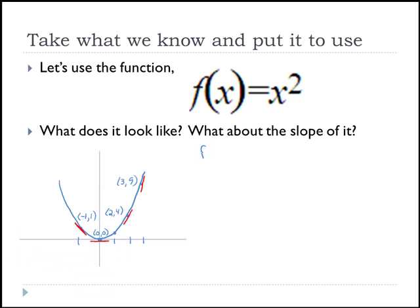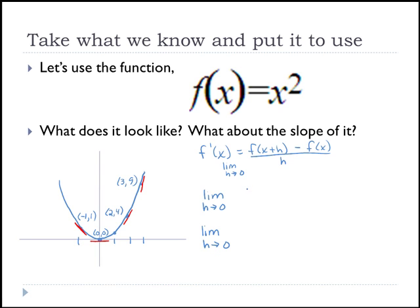To find the derivative — which we call f prime of x — we're going to use the formula: the limit as h goes to 0 of f of x plus h minus f of x, all over h. We can find a general slope formula and then plug in, or if we wanted to focus on a specific point like (2, 4), we could plug in 2 for x. But let's leave x as x and plug in x plus h and x.